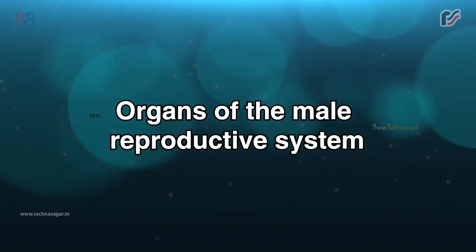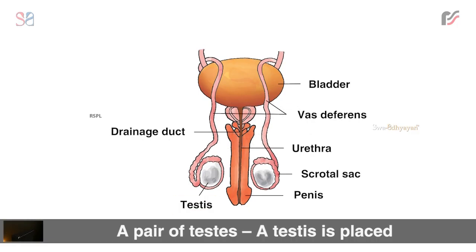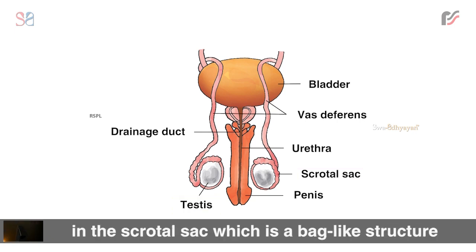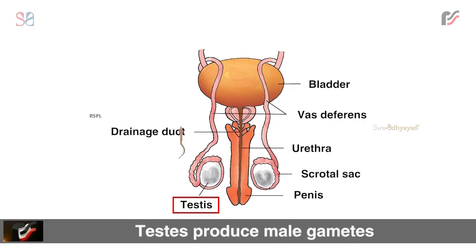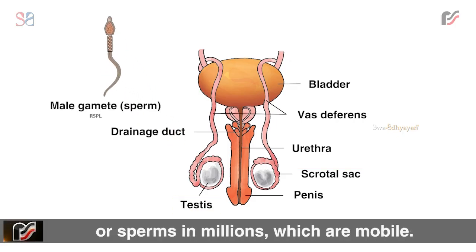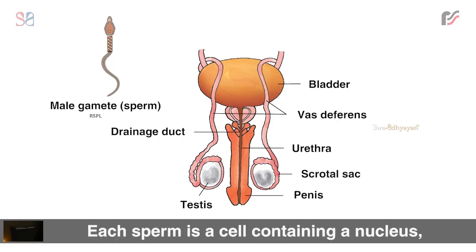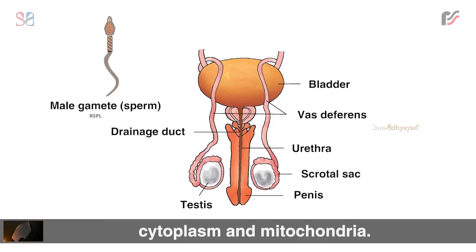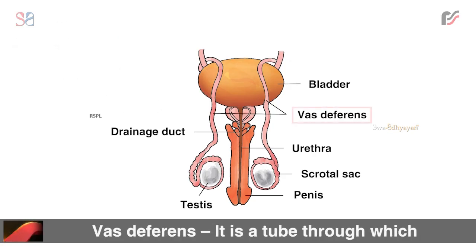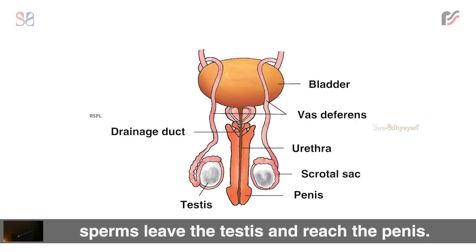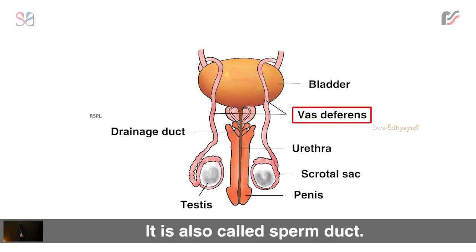Organs of the male reproductive system: a pair of testis. A testis is placed in the scrotal sac, which is a bag-like structure hanging externally from the lower abdominal cavity of the body. Testis produce male gametes or sperms in millions, which are mobile. Each sperm is a cell containing a nucleus, cytoplasm, and mitochondria; it has a head, middle piece, and a long tail. The vas deferens is a tube through which sperms leave the testis and reach the penis — it is also called the sperm duct. The penis is used for sperm injection inside the body of the female.